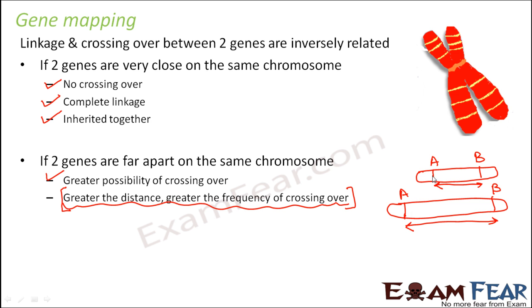The possibility of crossing over is more when the distance between genes is more. Using a friends analogy: when friends are loosely connected and far away from each other, there is more possibility that they will join some other group — they will recombine with some other group. Recombination happens due to crossing over. This is the simple concept on which the entire logic of gene mapping was founded.